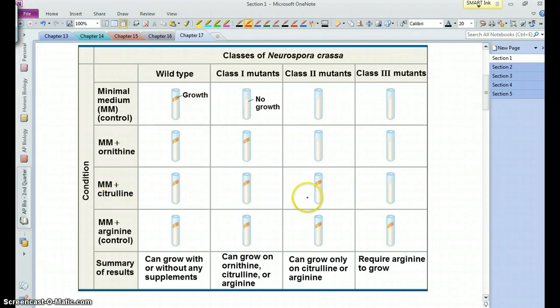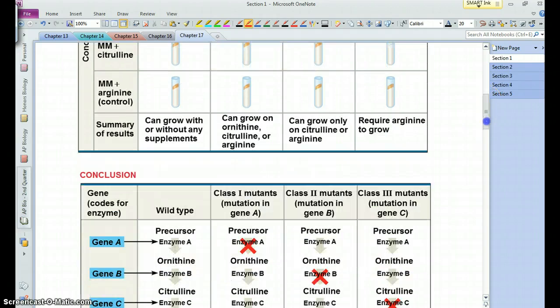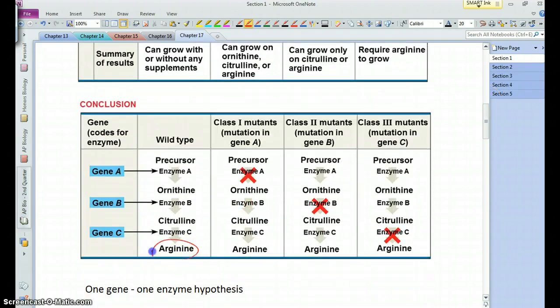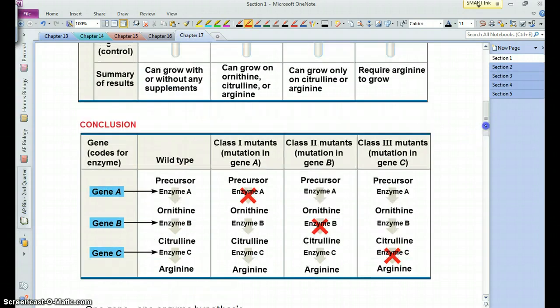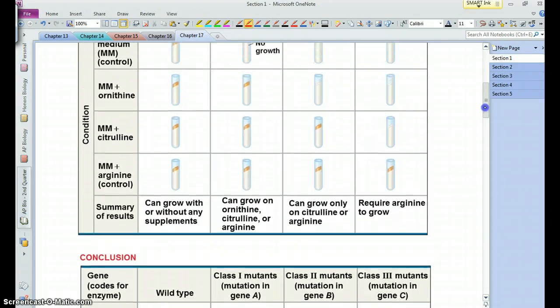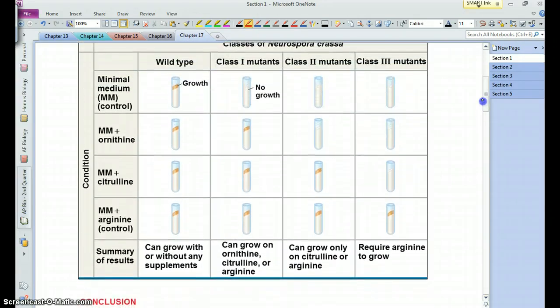If citrulline is provided, the class 1 and class 2 do just fine, but the class 3 doesn't. And then if they're given arginine, they all do just fine. Now notice in our pathway, arginine is the product that is being made, so essentially if you provide them with this, they do just fine.